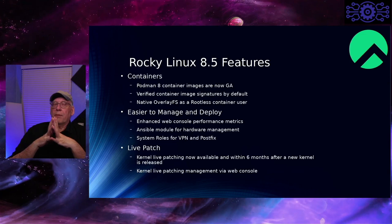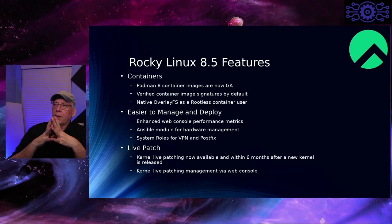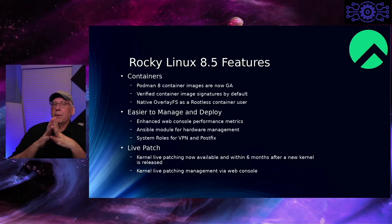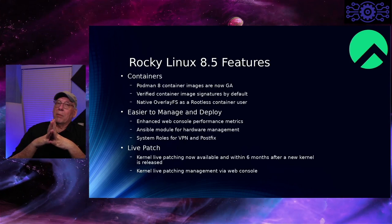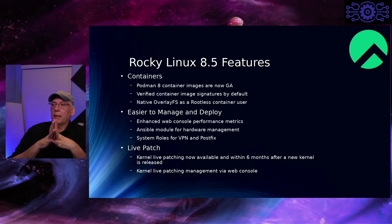There are system roles for VPN and Postfix. The big one is you can now do kernel live patching — that's available. They'll do live patches, but if it's a major kernel release, like going from 4.18 to 4.19, that would be done within six months after a new kernel build, which is pretty fast. You can enable and manage that with the Cockpit web console now.